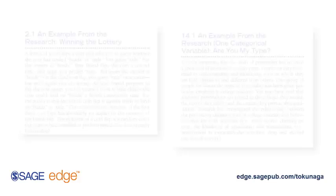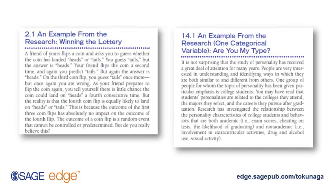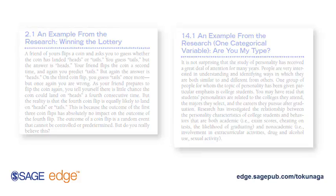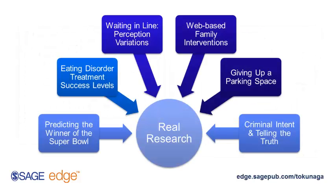Let's take a look at some of the key features of this text. The author has carefully chosen examples from real research studies to illustrate how statistics are used within the research process, using a feature called "An Example from the Research." These examples are not only real, but they also cover a diverse range of topics that students will relate to and appreciate.